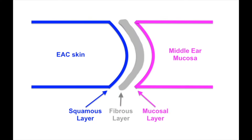Normally the tympanic membrane has three layers: an outer squamous layer, a middle fibrous layer, and an inner mucosal layer. The ear canal is lined by skin and this is distinct in thickness from the normal TM.